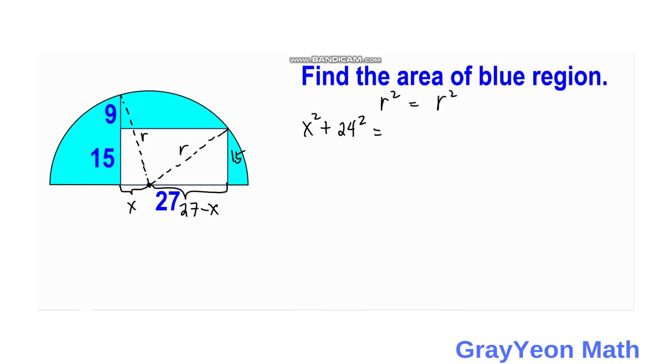And that would be 27 minus x square plus 15 square. And we copy this x square plus 24 square is equal to 576 is equal to 27 times 27. That would be 729 minus 54x plus x square. Then we have 15 square.